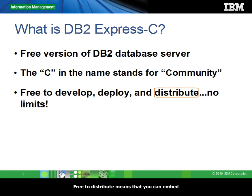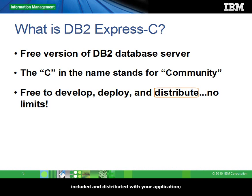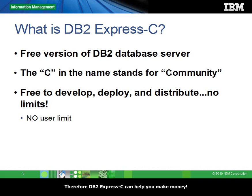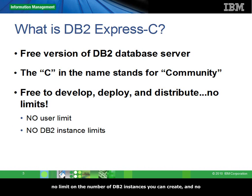Free to distribute means that you can embed DB2Express-C as part of your application. When you sell your application, even though DB2Express-C is included and distributed with your application, you do not need to pay anything to IBM. Therefore, DB2Express-C can help you make money. No limits refer to the fact that there is no limit on the number of users to the database, no limit on the number of DB2 instances you can create, and no database size limit — your database can grow to any size.